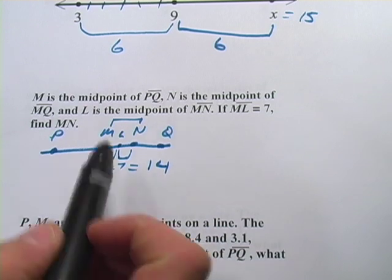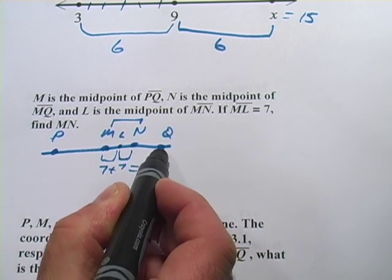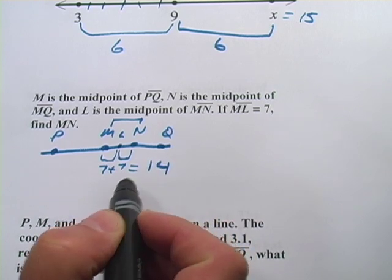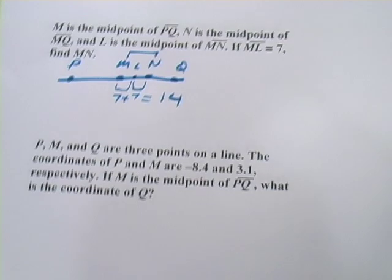And if this problem instead asked what the distance from M to Q is, if this one's 14, this one would be 14, so that'd be 28, and so forth. All right, let's try one more midpoint problem.